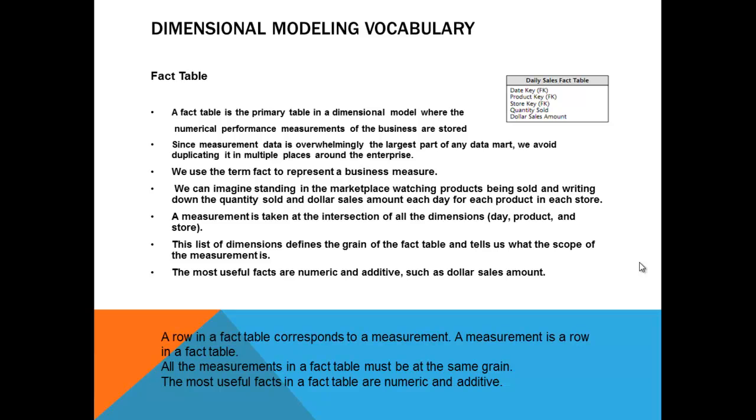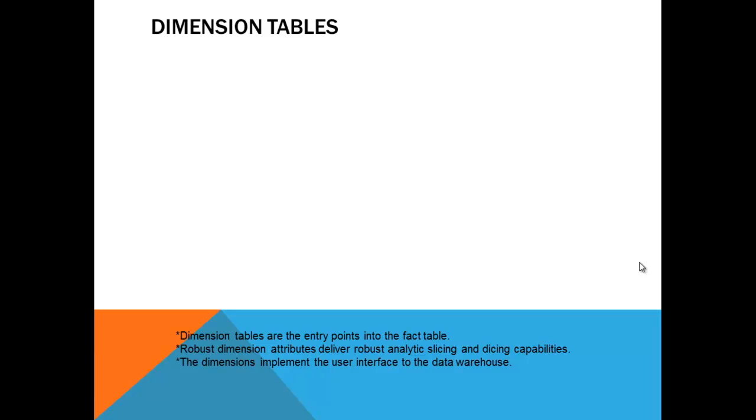This is the sample daily sales fact table. As I was telling you everything is keys. You have a date key, product key, store key, quantity sold and the dollar amount. If you look at a fact table it doesn't make sense for you because what can you understand by saying a product key or a store key. So let us move to the next topic which is our dimension table.